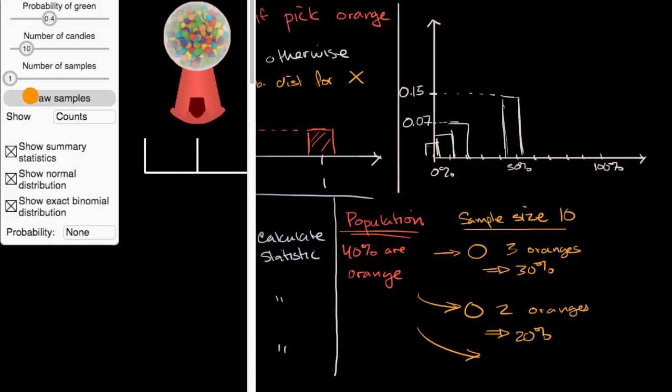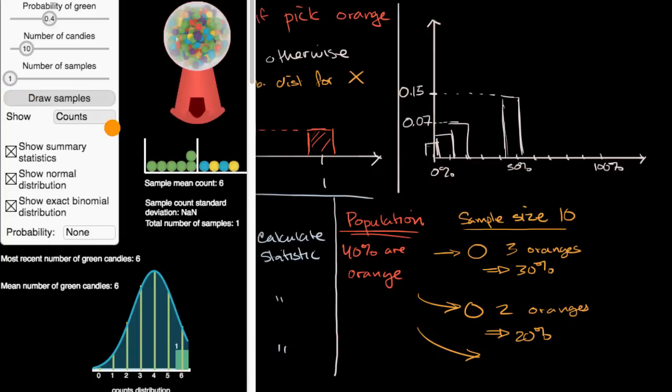So let's just draw a sample. And so what we did is we took 10 of these gumballs out, and we are counting how many of them are green. So in this first sample of 10, we see that one, two, three, four, five, six of them are green.